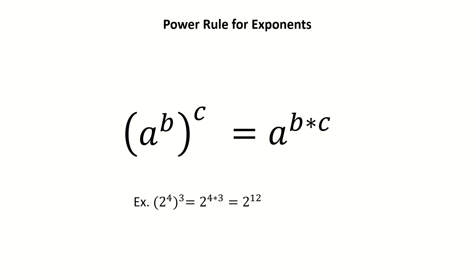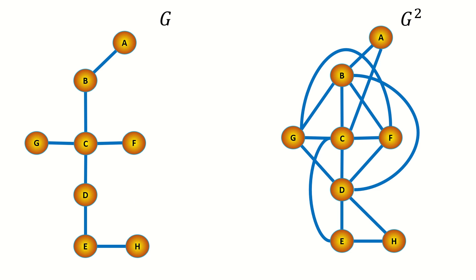Why does the power rule for exponents also apply to graph powers? Well, remember that when we take the second power of a graph, all vertices that were at a distance of 2 from each other in the original graph become adjacent. So the shortest path between two vertices in the original graph becomes shortened by about a factor of 2 in the second power of that graph. For instance, vertices a and e were 4 apart in g, but only 2 apart in g squared.